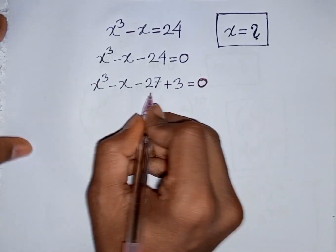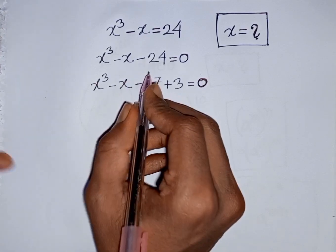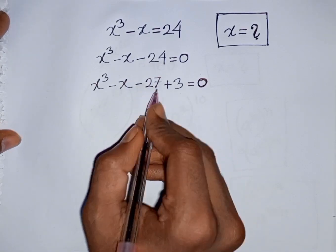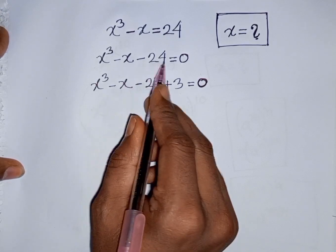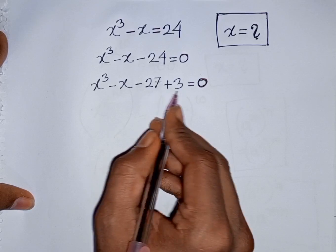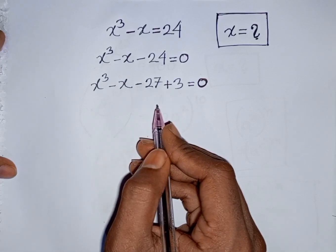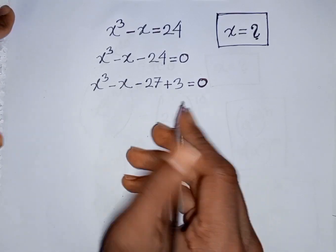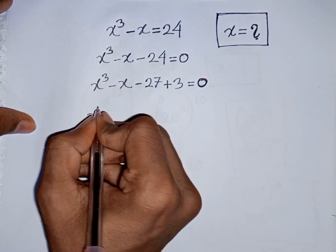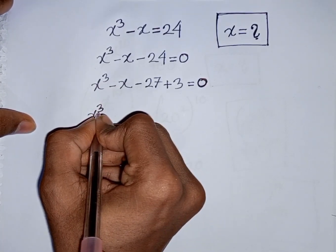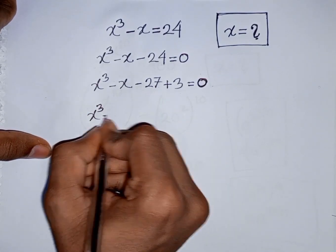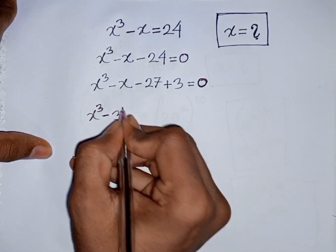How to understand this? Pay attention here. The nearest cubic number of 24 is 27. So you can write minus 24 as minus 27 plus 3. Now we have x³ minus 27, which is the same as minus 3³.